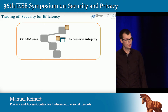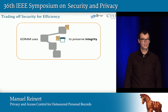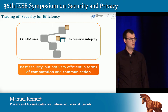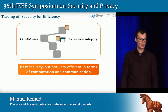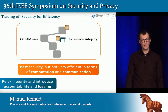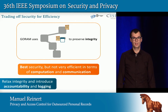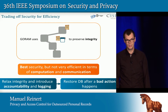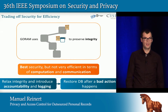Taking a closer look at efficiency, GoRAM uses these integrity proofs to achieve integrity, which gives us the best security properties. Unfortunately, it is not very efficient in terms of computation and communication. So we thought of ways to improve efficiency. One approach is to slightly relax integrity by introducing after-the-fact enforcement — namely, accountability in combination with logging or auditing. With this technique, we can restore the database after a bad action happens, as opposed to preventing the bad action altogether.